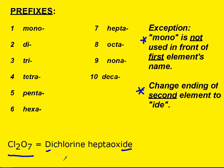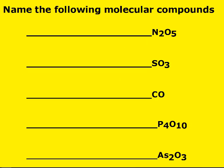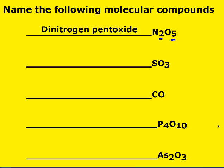Let's look at a couple of examples. The first one: we have two nitrogens and five oxygens — two is di and five is penta — so dinitrogen pentoxide. You can also say pentoxide. A lot of times, if there are two vowels in a row, the vowel on the prefix gets dropped.